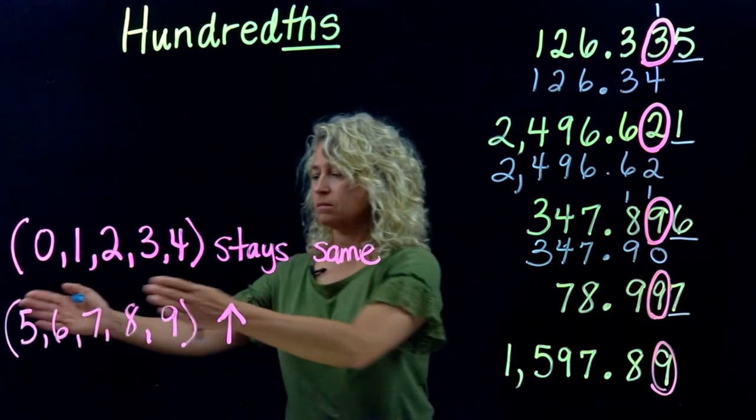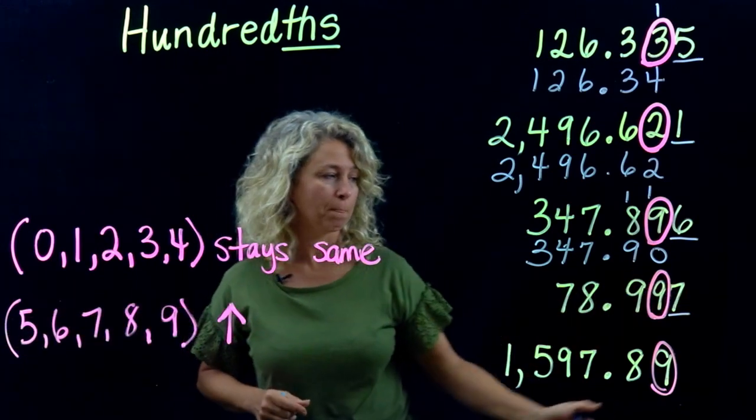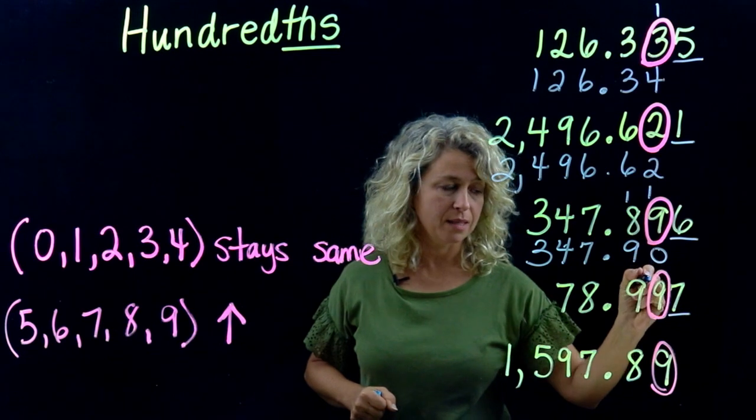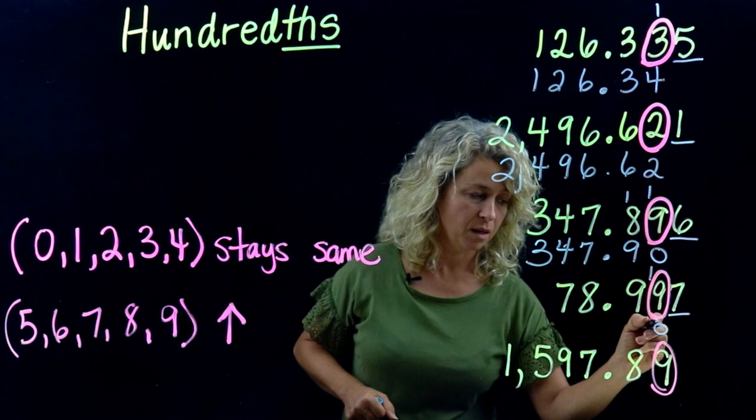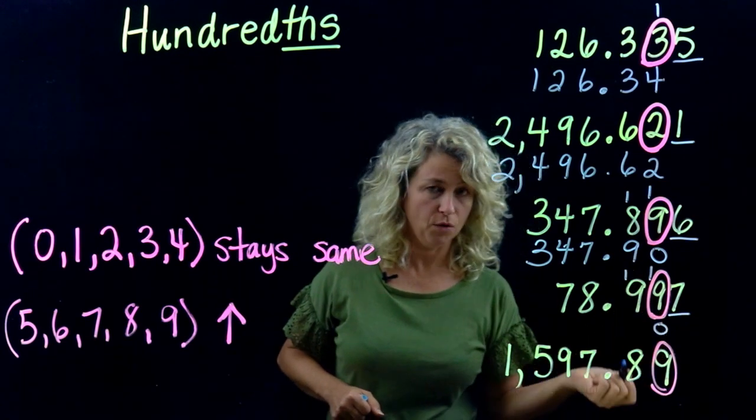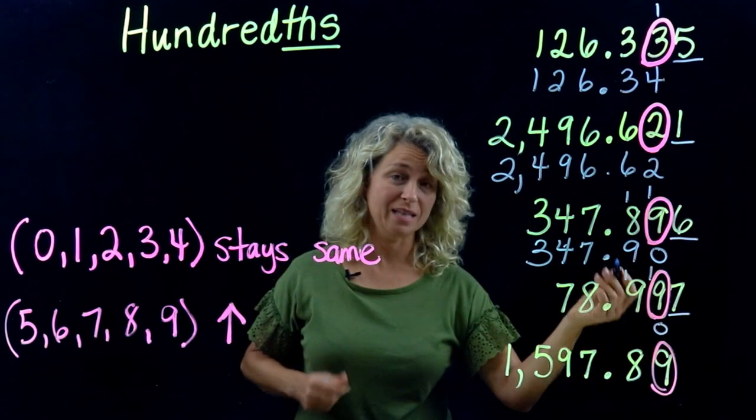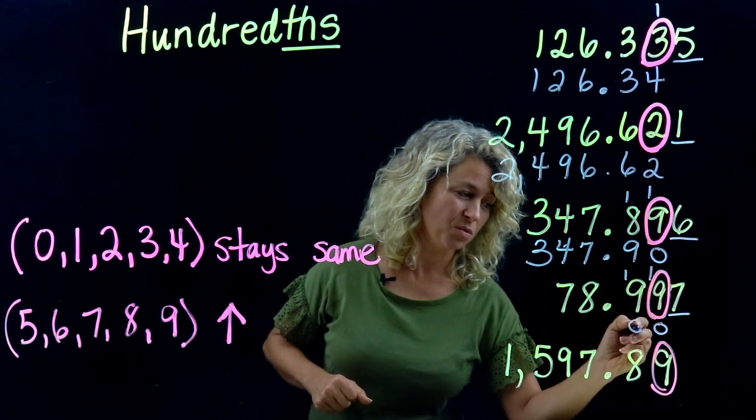Seven—we're going to round up. So rounding up means add one to that digit. Nine plus one is ten. Put your zero down, carry the one over. Nine plus one is ten again. Put your zero down and carry the number over.